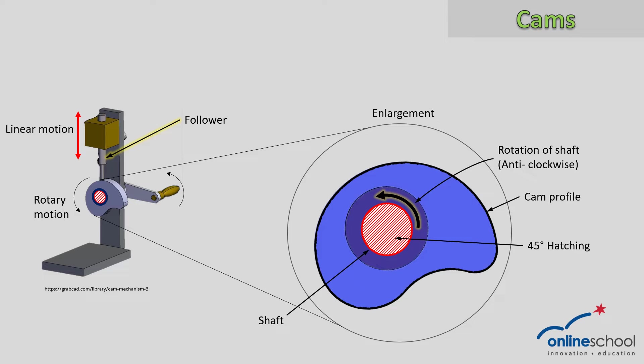Let's say this arm is turning in an anti-clockwise direction. As it's turning, it will affect the follower's movement. We then have a rotary motion of the cam disc and handle that is now transferred into a linear motion of the follower, which is just moving up and down along the profile's edge of our cam disc. So we have a classic example and easy illustration of rotary motion transferred to linear motion.